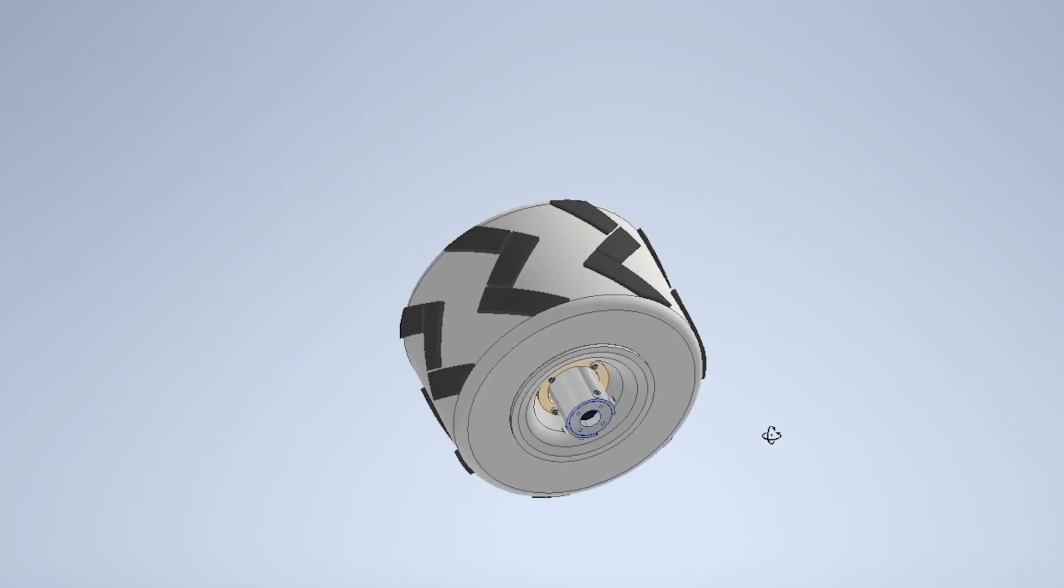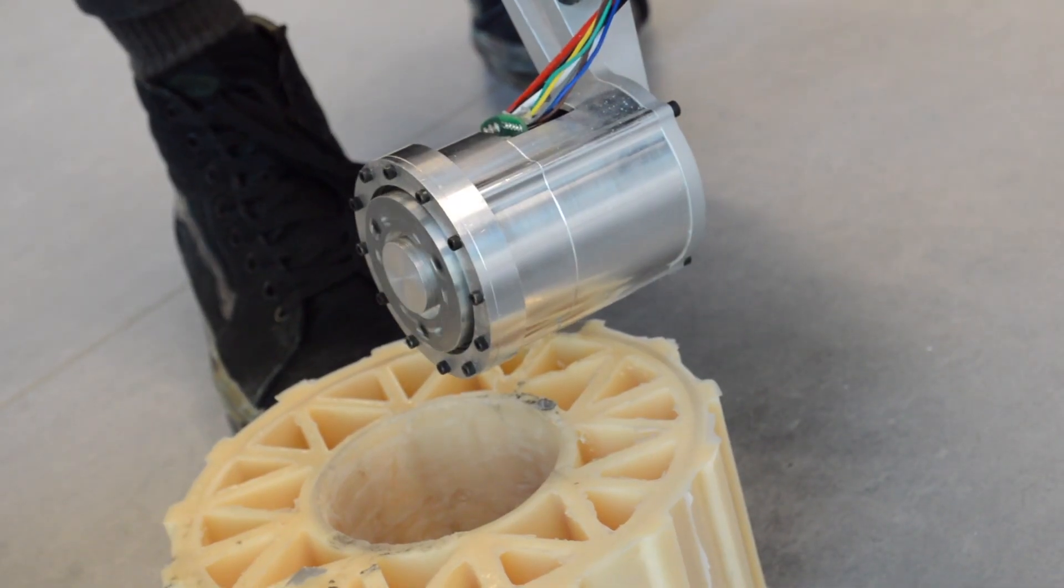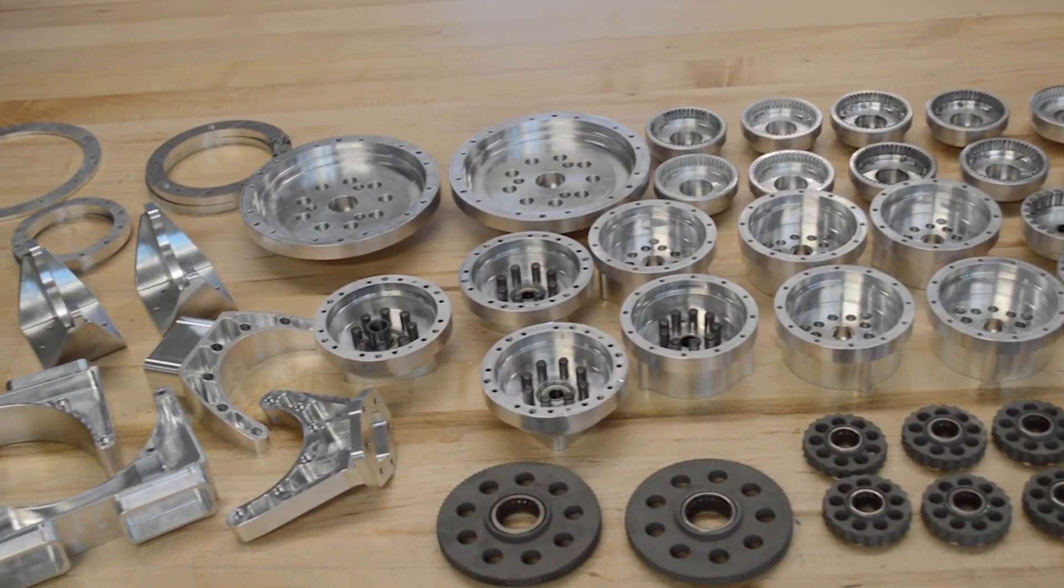Our six wheels consist of an interlocking rigid hub and a flexible urethane outer wheel cast in a 3D-printed mold. They are powered by Maxon motors that drive cycloidal drive gearboxes we have designed and manufactured.